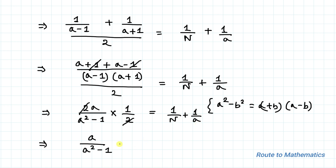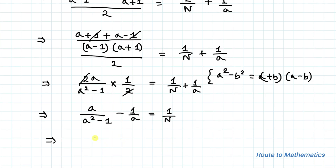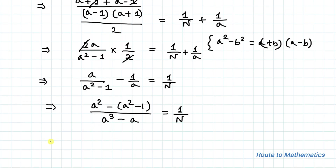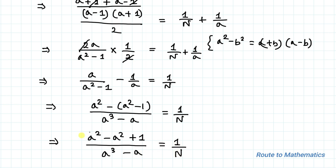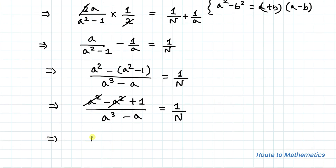Taking 1/a to the left-hand side, we have a/(a²−1) − 1/a = 1/n. Taking the LCM again: (a² − (a²−1)) / (a³−a) = 1/n. Opening the bracket: (a² − a² + 1) / (a³−a) = 1/n. The a² terms cancel, so n = a³ − a.